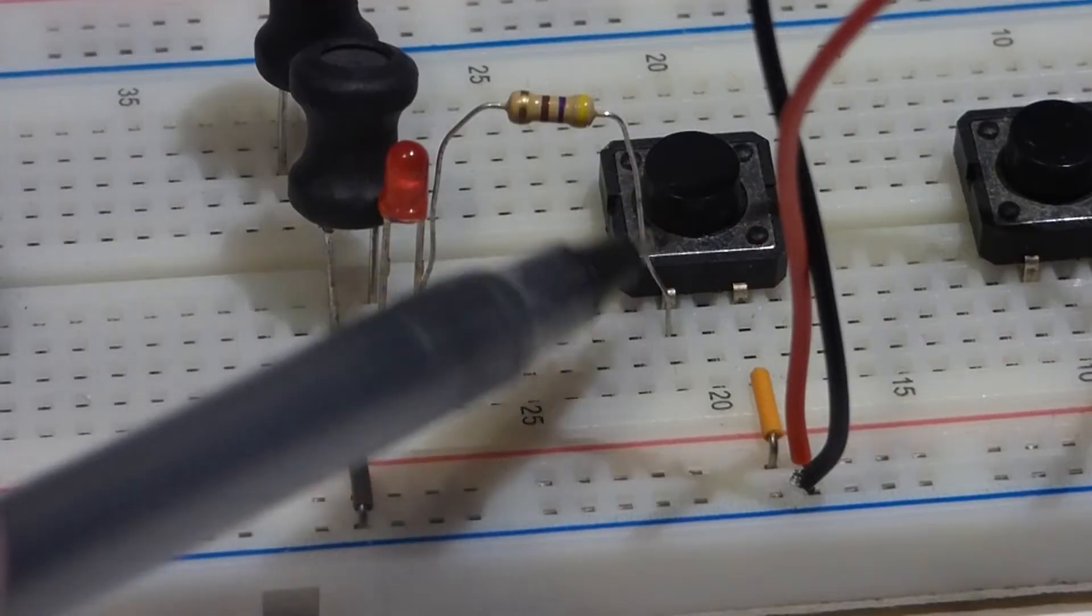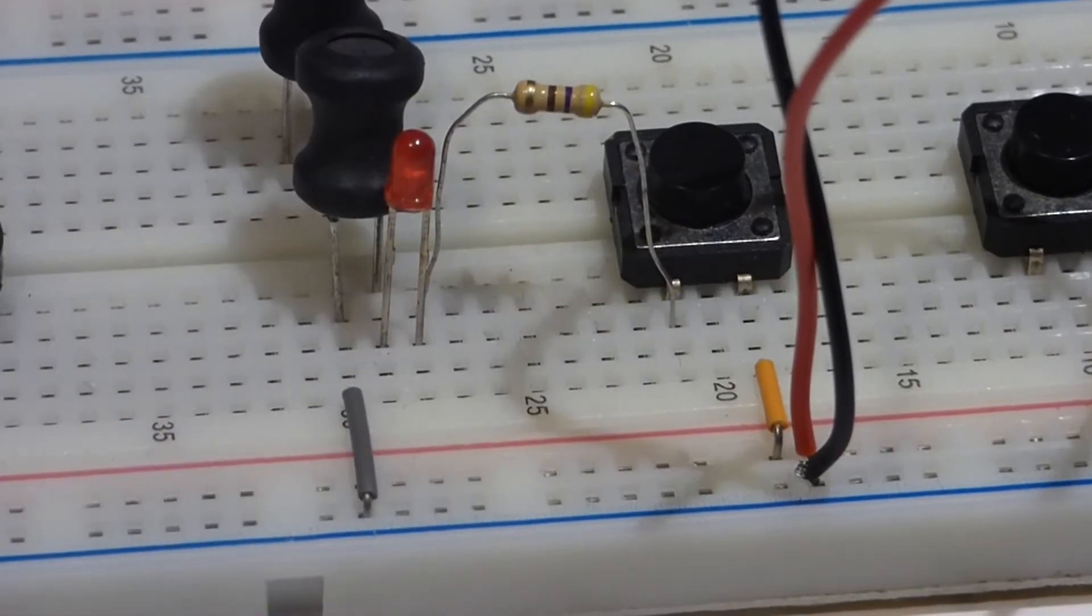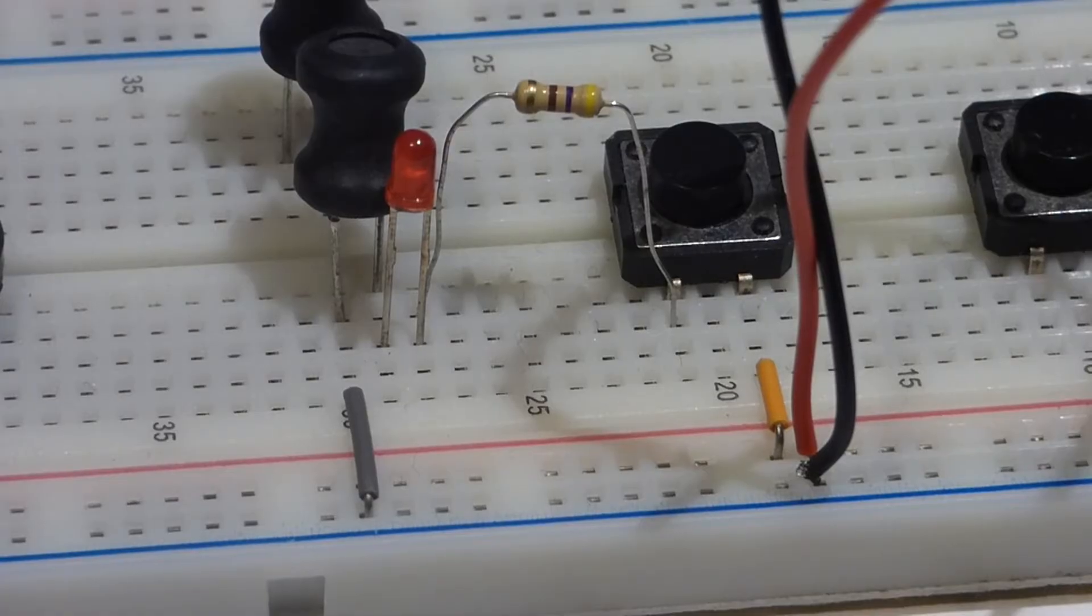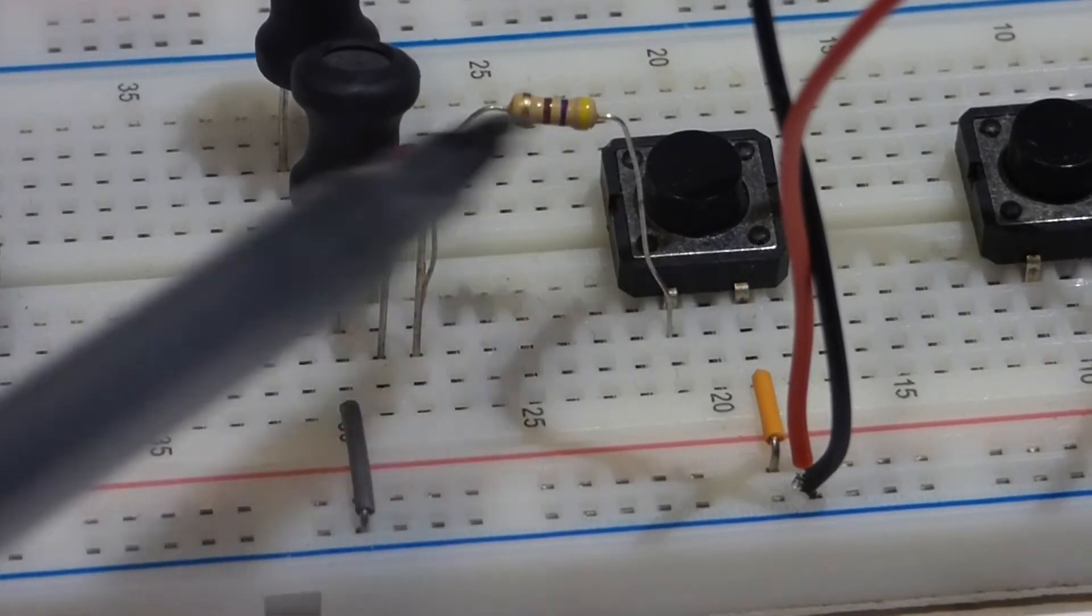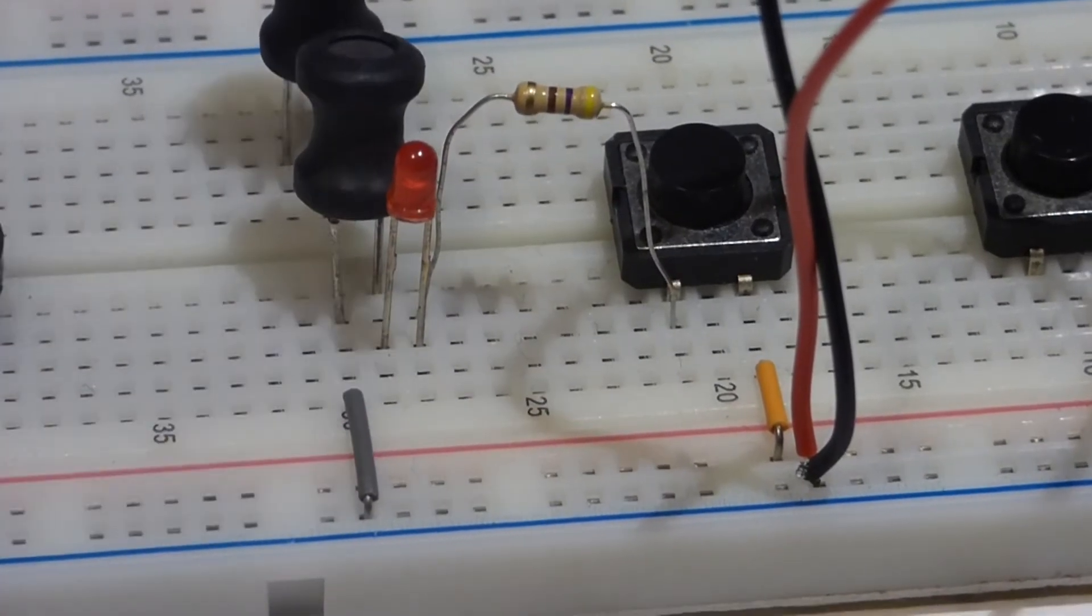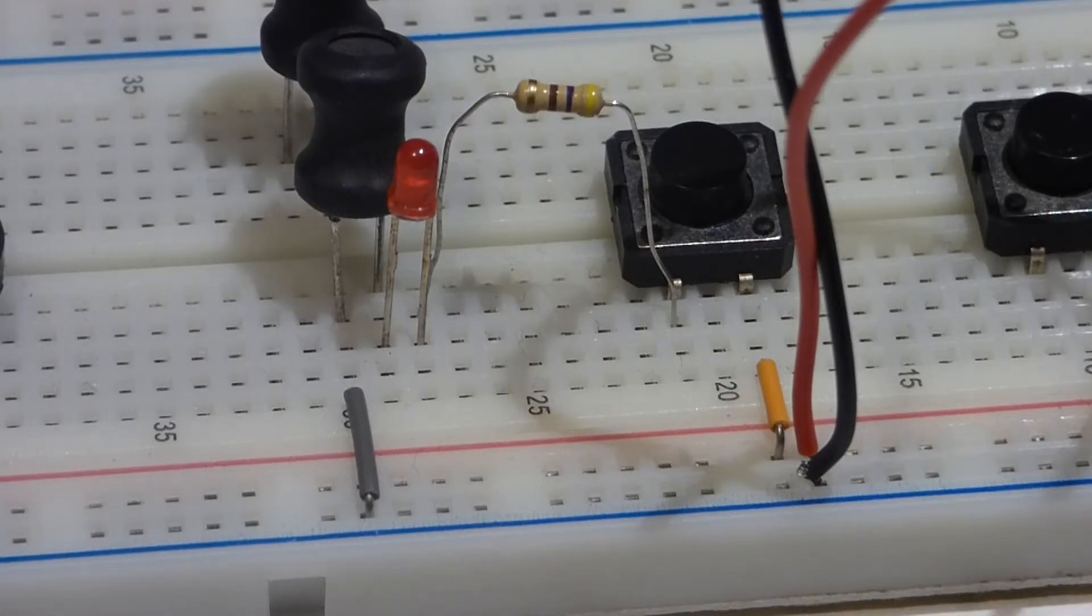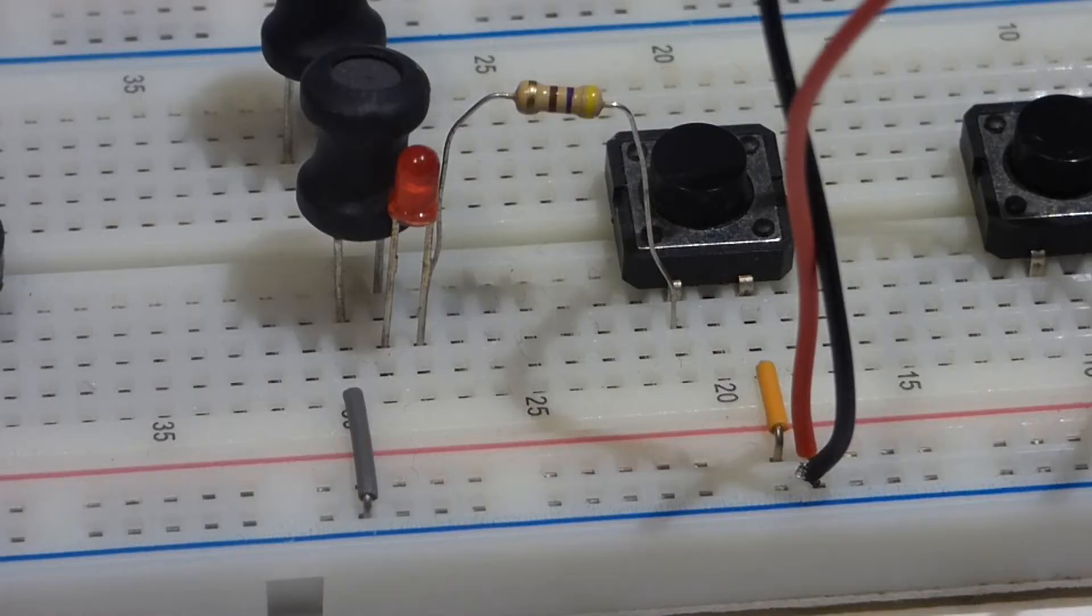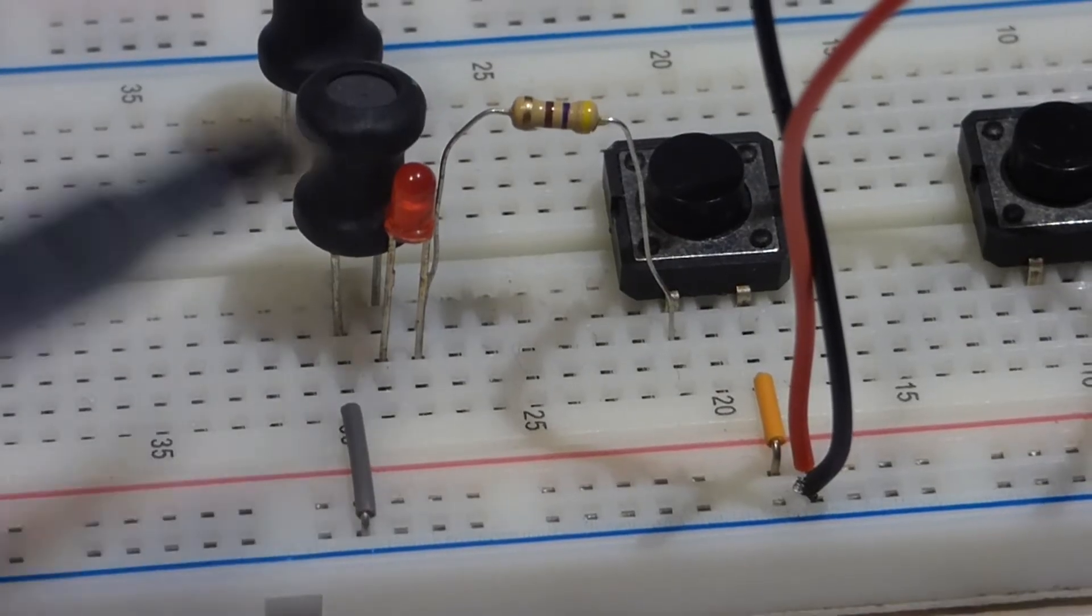At first it will slow the current down. It'll keep the current from rising to its maximum amount for a very brief period of time. While it's doing that, it's building a magnetic field.